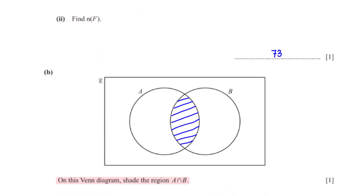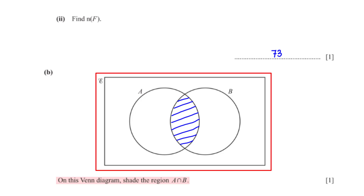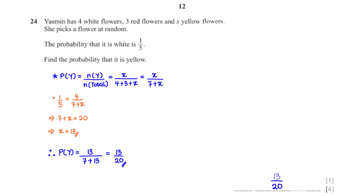On this Venn diagram shade the region A intersection B — in other words, shade the region common to sets A and B.